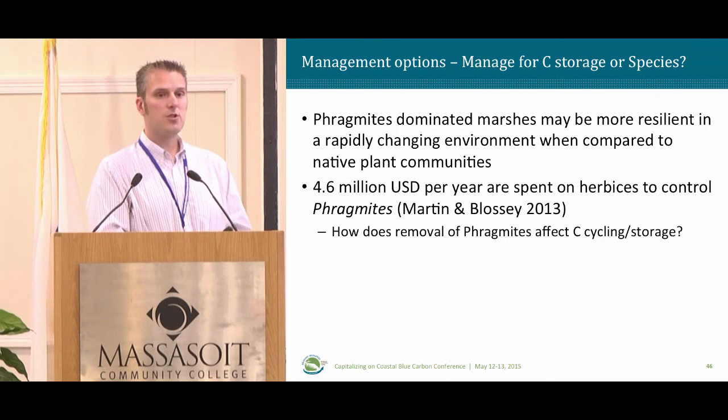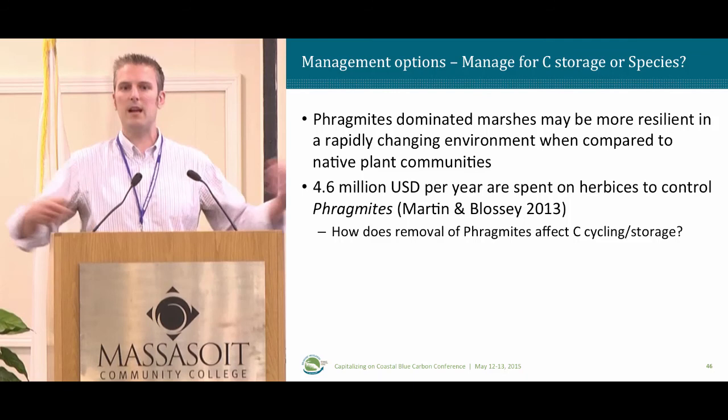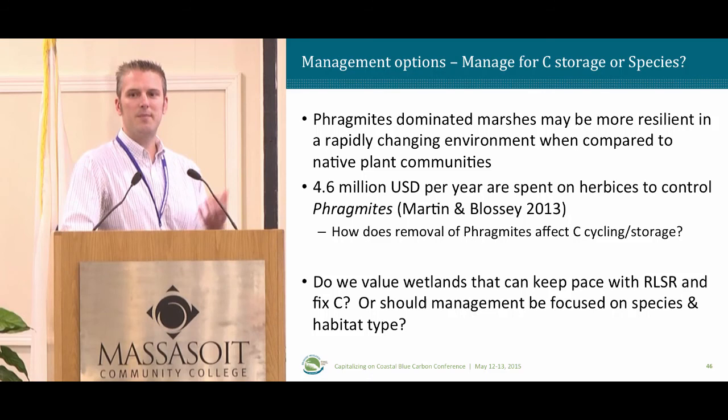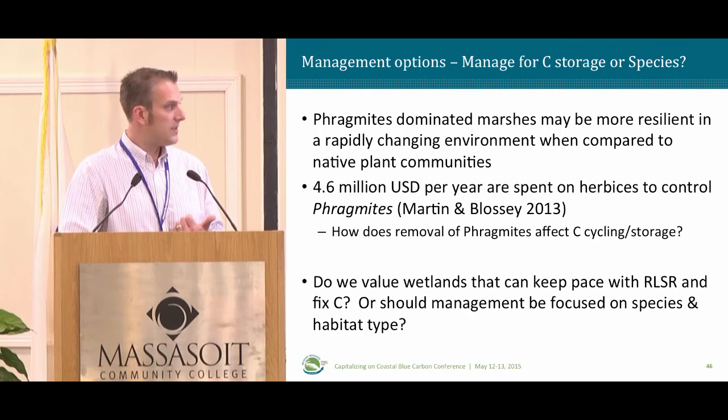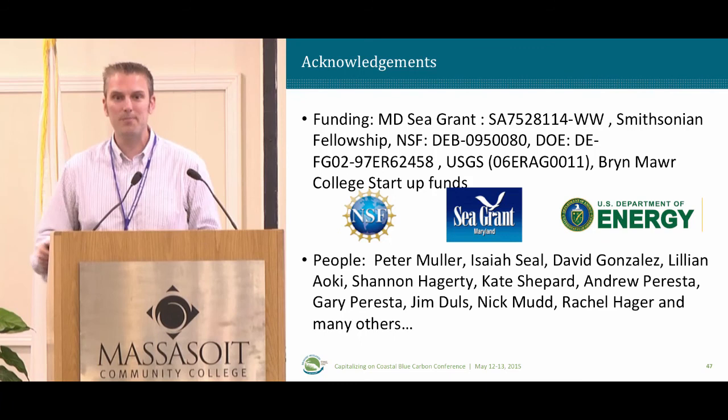Currently 4.6 million US dollars per year are spent in the United States alone to control Phragmites. There are big unanswered questions: how does remediation affect carbon storage? When Phragmites is killed there's often no plan for replanting, leaving systems net heterotrophic and respiring away carbon for years to decades — and often Phragmites comes back anyway. The question I'll leave us with is: do we value wetlands that can keep pace with relative sea level rise and fix carbon, or do we remain fixated on species and habitat type?